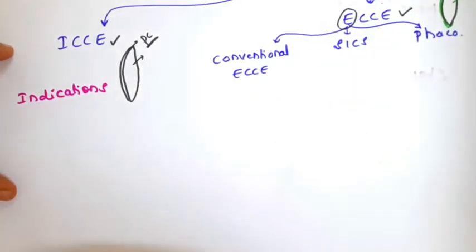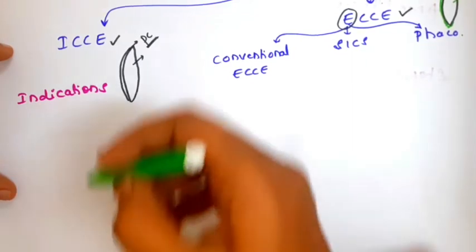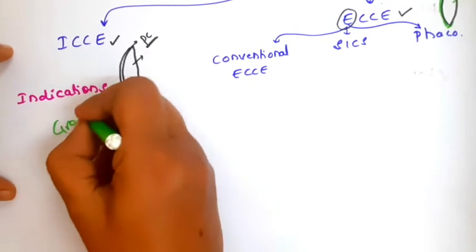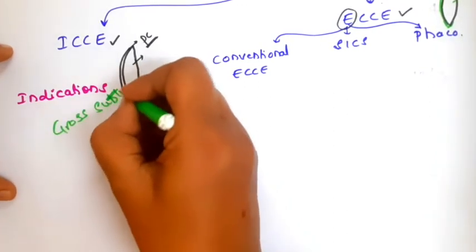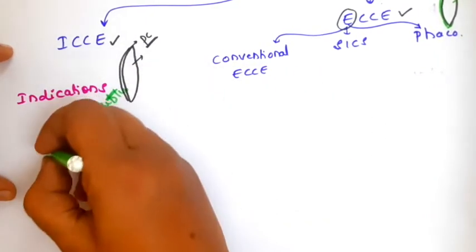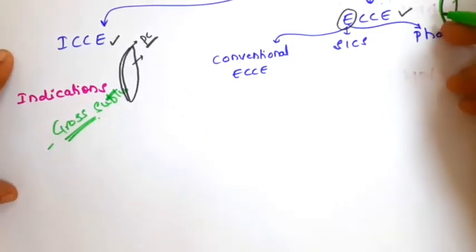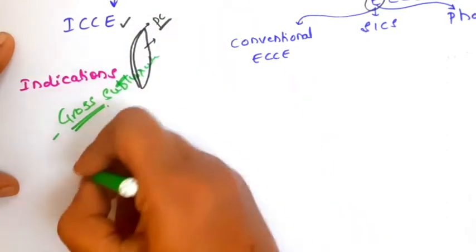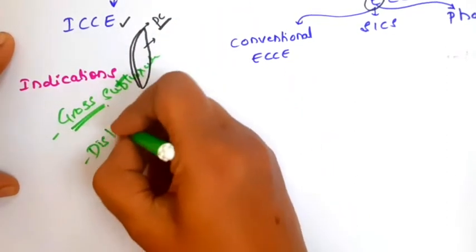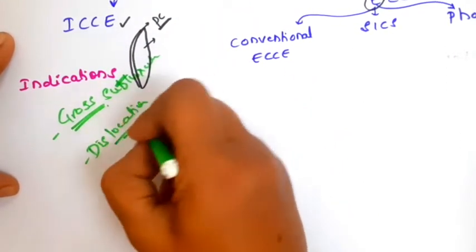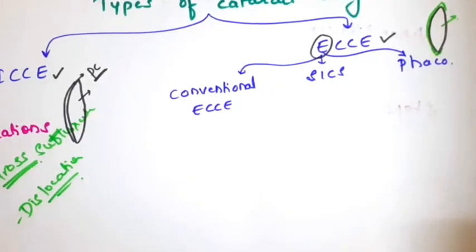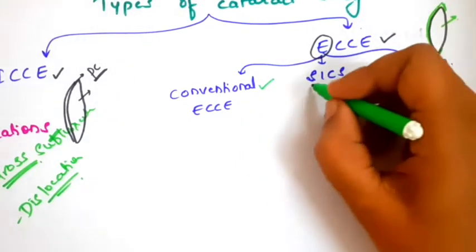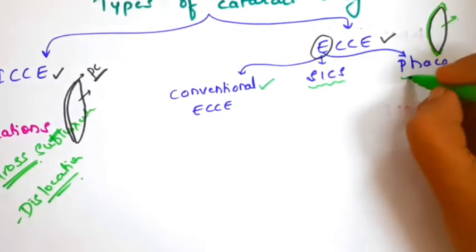There are very few indications for intracapsular cataract surgery now. The indications are like gross subluxation — remember, only very gross subluxation. If it is mild subluxation, ECCE is preferred. Only when there is gross subluxation or dislocation of the lens do we go for intracapsular cataract extraction.